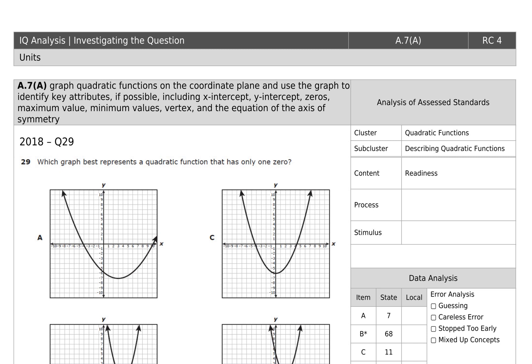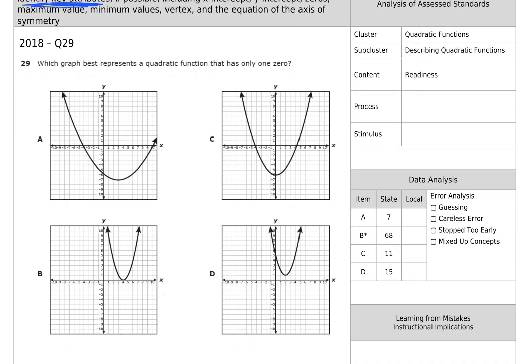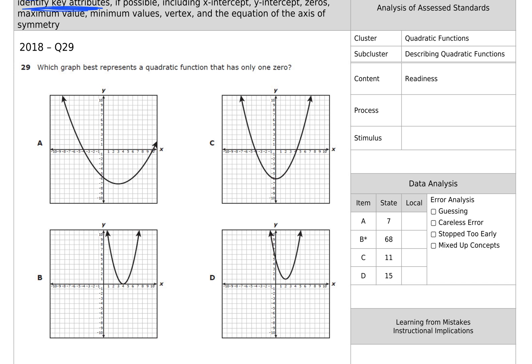Alright, getting ready for STAR. Here we have TEAC A.7a, which is about graphing quadratic functions and mainly identifying key features. This is one of the easiest readiness standards on the STAR, so we're thankful for it.